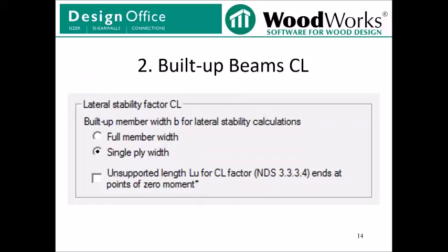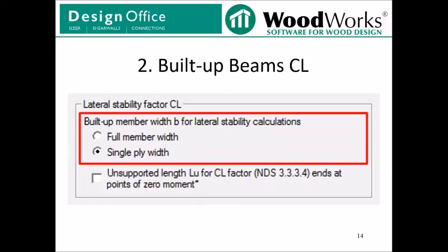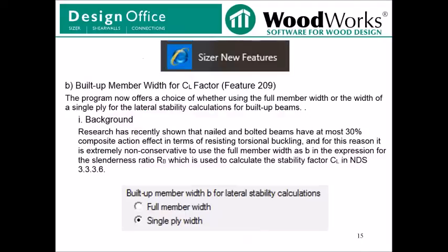Alright, now we are going to discuss the other feature related to lateral stability factor CL. This feature allows you to specify whether to calculate built-up member lateral stability based on a single ply or the full width of the member. If you click on the Sizer new features files available in your C folder for the software, you can read all the details about the new features which were added to Sizer 11. In the case of this feature, there is some background. Research has recently shown that nailed and bolted beams have at most 30% composite action effect in terms of resisting torsional buckling. And for this reason, it is extremely non-conservative to use the full member width as B in the expression for the slenderness ratio RB, which is used to calculate the stability factor CL. This research has not yet been published, but a feature has been added to the program to now allow you to calculate CL based on a single ply instead of the full width of the member.